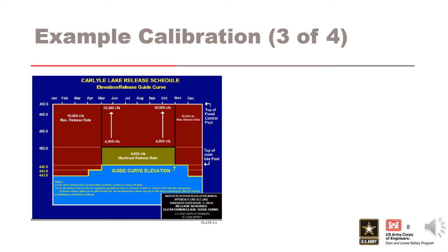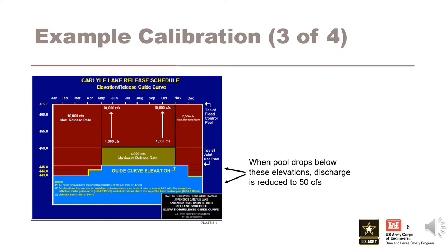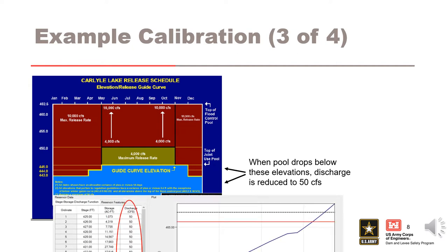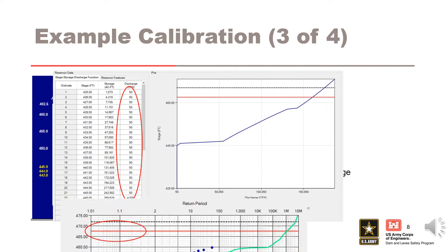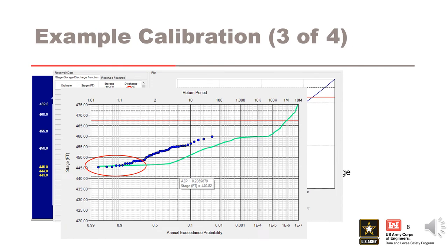Now we will look at the operations to try to get a better match to how the project actually operates. From this plot, we can see that there is a minimum pool elevation for the project, in the range of 443 to 445 feet depending on the season. Below these elevations, the discharge is reduced to 50 CFS to maintain channel flow downstream. We can quickly apply this modification to the discharge curve. Now we can run the expected curve again to see if it lines up with the historic points — and we can see that it does. We need to keep working our way up the curve to match the other historic points.